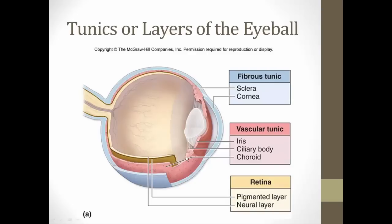The front portion of the vascular tunic is called the ciliary body. It is composed of smooth muscles — called ciliary muscles — that are attached to suspensory ligaments, which in turn attach to the lens. This system controls the diameter of the lens and how well light is focused on the retina — this will be the focus of our discussion on optics of the eye.